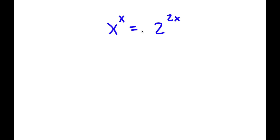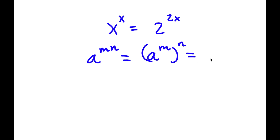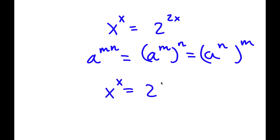I have x to the power of x is equal to 2 to the power of 2x. To solve this problem, if I have something in the form a to the power of m times n, this is simply equal to a to the power of m to the power of n, or also equal to a to the power of n to the power of m. So in this case, I have 2 to the power of 2x, and I'm going to rewrite that as 2 to the power of x to the power of 2.